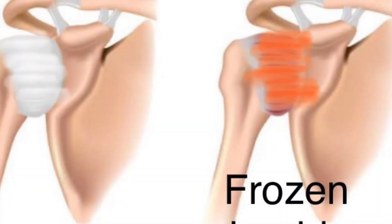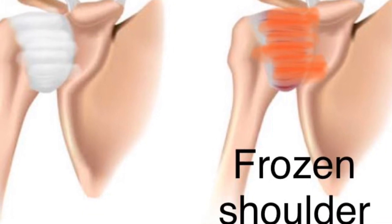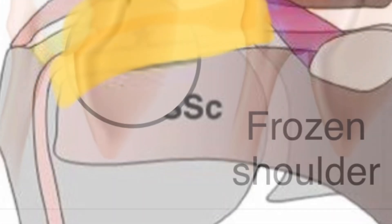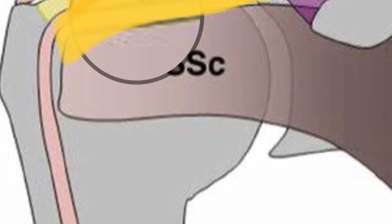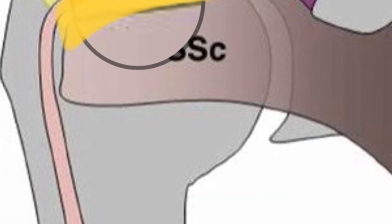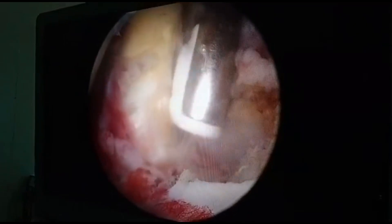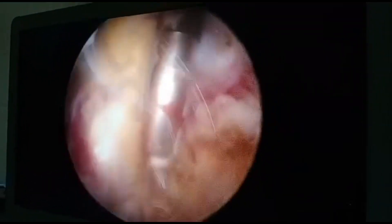I'll be showing you the technique. This picture shows how the capsule gets scarred in adhesive capsulitis. The first step is something called the rotator interval release. The rotator interval is a space or gap in the front of the shoulder between the muscles, and this video shows how we do the release.